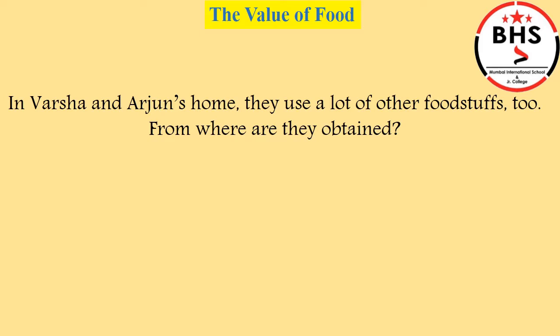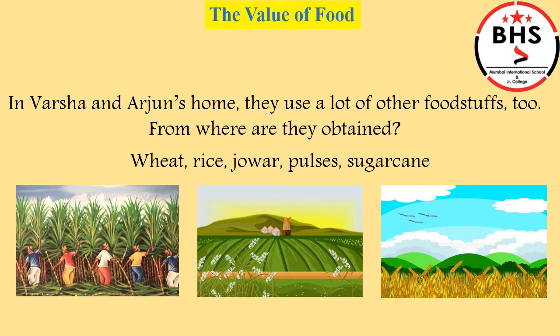In Varsha and Arjun's home, they use a lot of other foodstuffs too. From where do we get these foodstuffs? For example, wheat, rice, jawar, pulses, sugarcane. Children, all these grow in the farm by the farmers. They are grown, cut, packed, and sold.